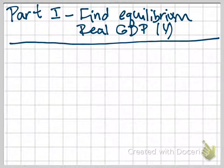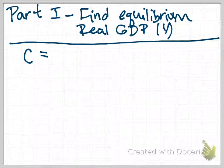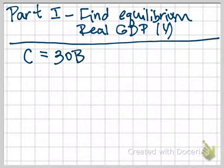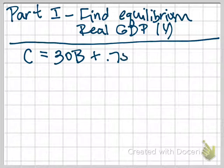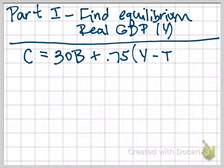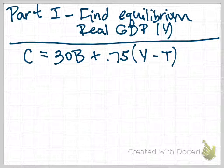That's the first part. The first part of this question asks us to find equilibrium real GDP. So let's start by using the equation for our consumption function. As a reminder, it's C equals $30 billion plus 0.75 times Y minus T, with Y being real GDP and T being net taxes.